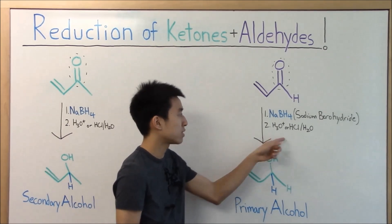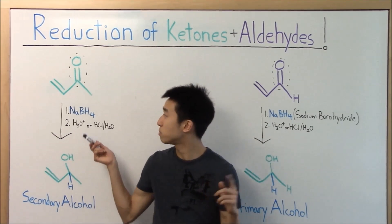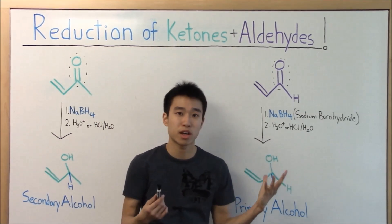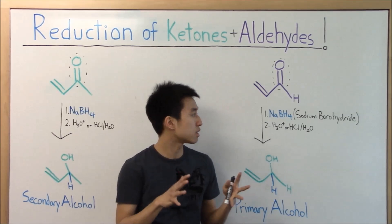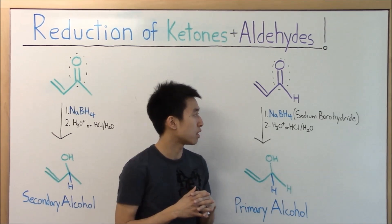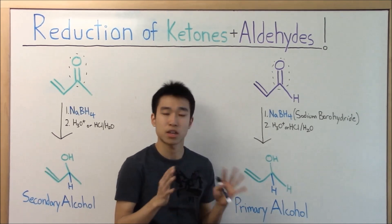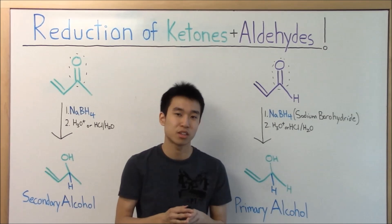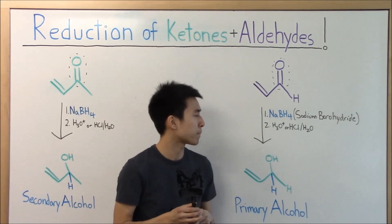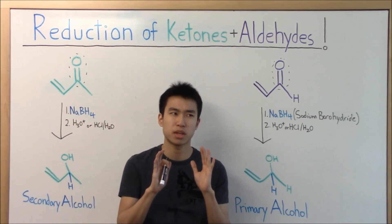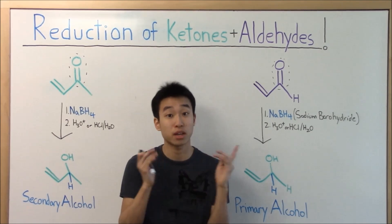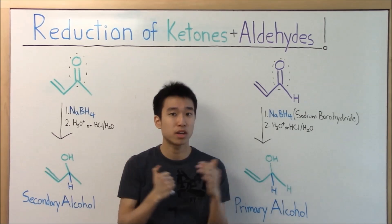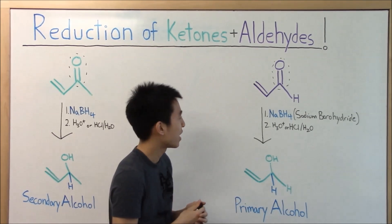You need acid to quench the reaction because NaBH4 — sodium borohydride — is basic. You just need the acid to quench the reaction. I'll explain more in my mechanism video for sodium borohydride, so don't worry too much about that.